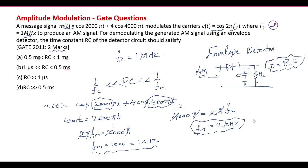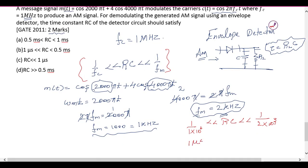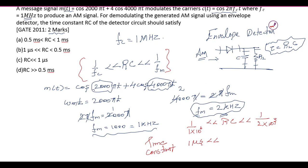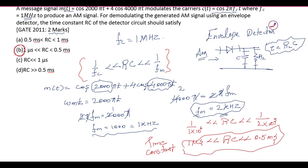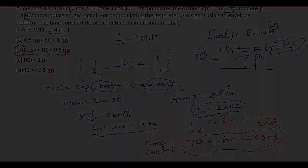Taking the maximum frequency component F_M = 2 kHz, the condition becomes: 1/F_C = 1/(1×10⁶) = 1 μs < τ < 1/(2×10³) = 0.5 ms. So the time constant must lie between 1 microsecond and 0.5 milliseconds. Option B satisfies this condition and is the correct answer.